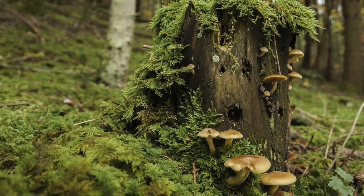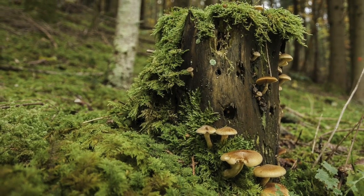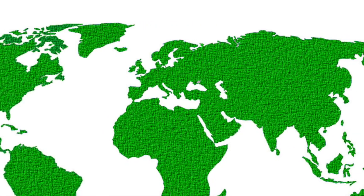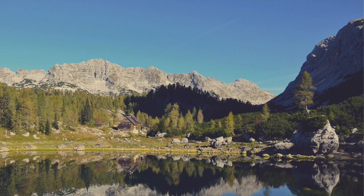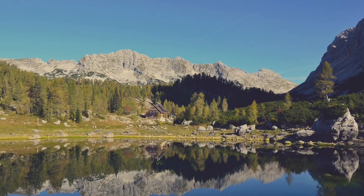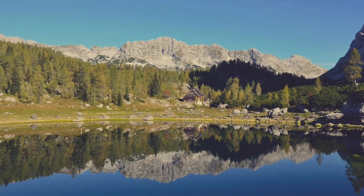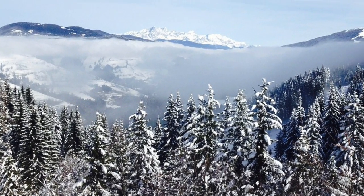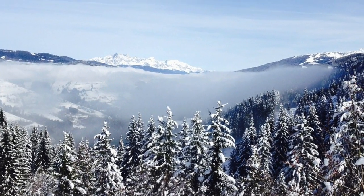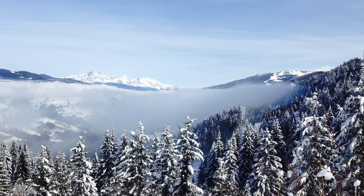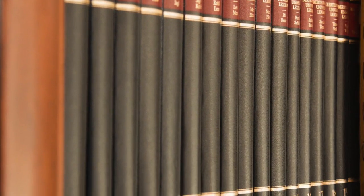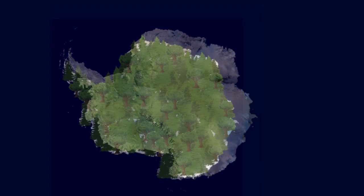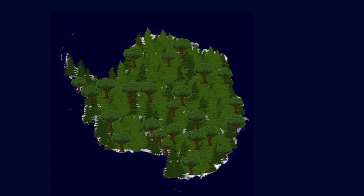Some interesting facts about forests: this biome extends to one-third of the total land surface of the Earth. Forests contain about 70% of the carbon present in living beings. Their average rainfall range is between 40 and 80 inches per year. According to scientists, during the Eocene, or 50 million years ago, Antarctica was covered with tropical forests.